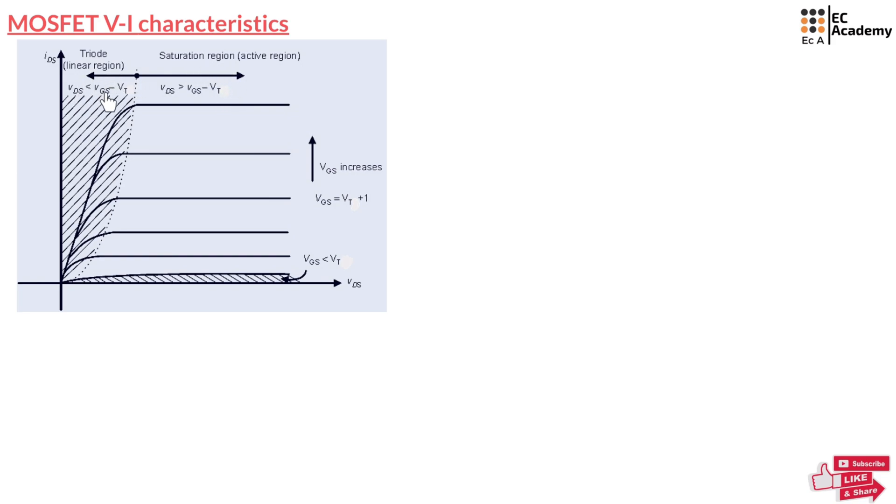The transition line between the linear region and the saturation region happens at VDS equal to VGS minus VT. At this exact point, VDS will be equal to VGS minus VT. Towards the right side, VDS will be greater than VGS minus VT — that is the saturation region. Towards the left side, VDS will be less than VGS minus VT. This point, represented by a dotted line, is the boundary of separation between the linear region and the saturation region.